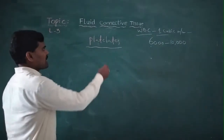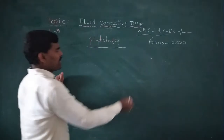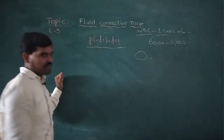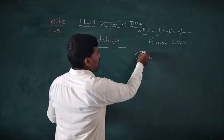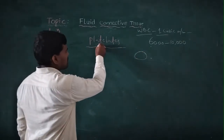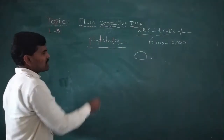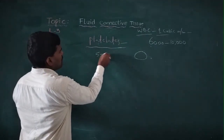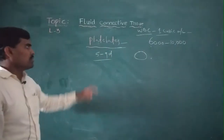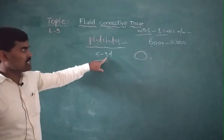The platelets are rounded and spiracle in shape. The lifespan of platelets is 5 to 9 days. The lifespan of WBCs is 12 to 30 days, and the lifespan of RBCs is 120 days.